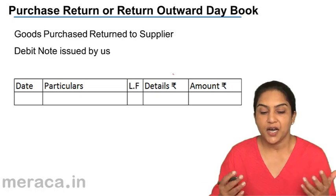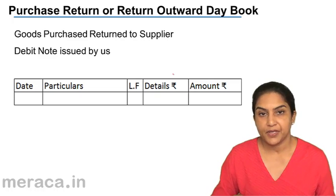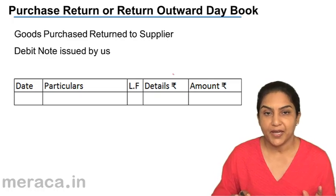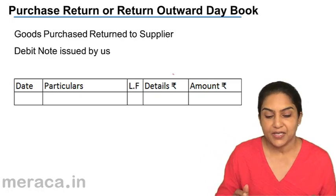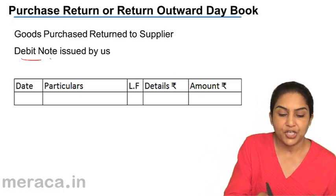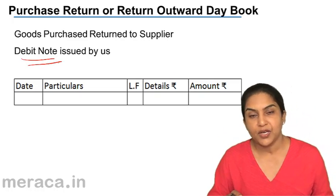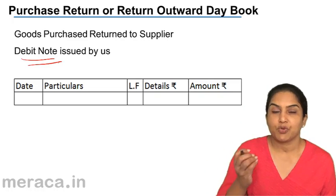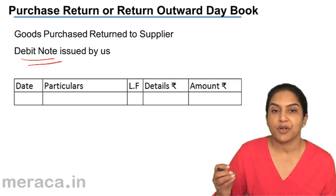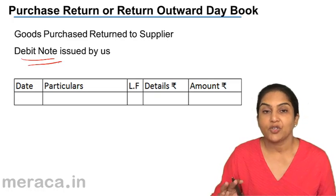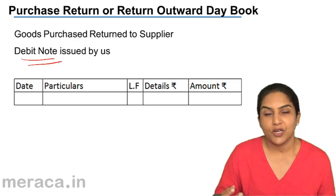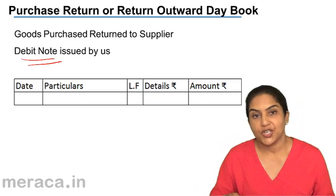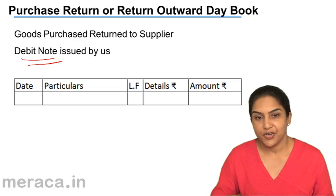Goods which are purchased are returned to the supplier. When we return the goods to the supplier, we need to debit the supplier's account, and sometimes we may issue a debit note to the supplier. When we purchase, the entry is: purchase account debit to supplier. Now that we are returning the goods, the entry becomes: supplier account debit to purchase return.